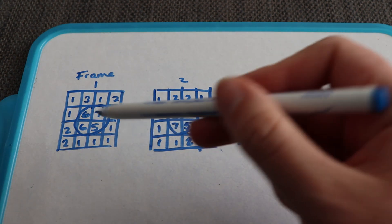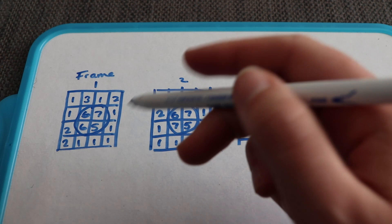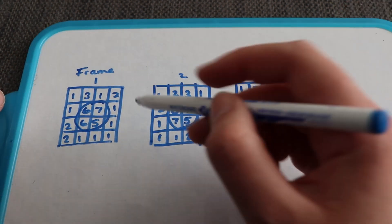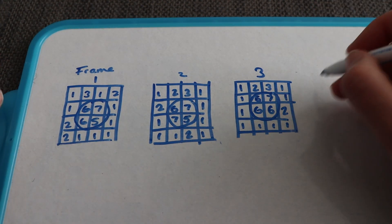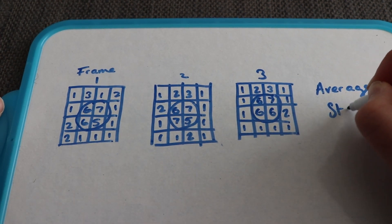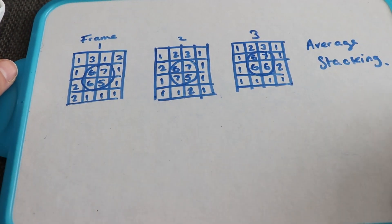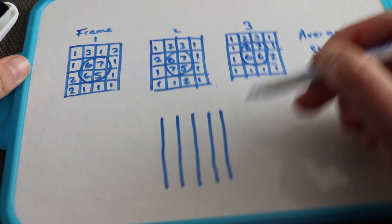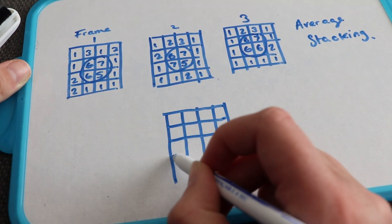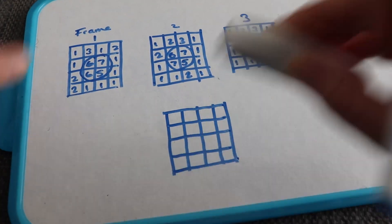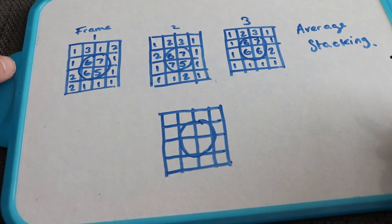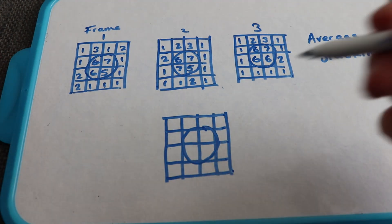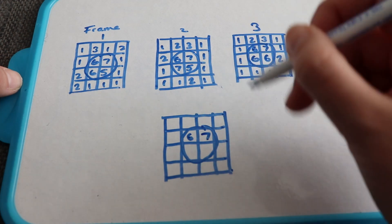So there we've got it - three frames, each with our target in it. This might be a nebula or a star or something. But around our target, the pixel values have changed due to noise. What stacking does - and this is the most basic mode of stacking - it's called averaging, or average stacking. We take each of those three frames and it looks at each frame in your series and just averages out the pixel number.